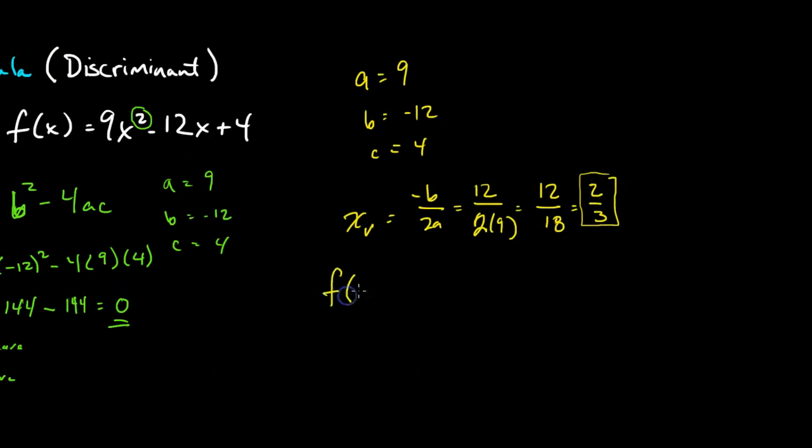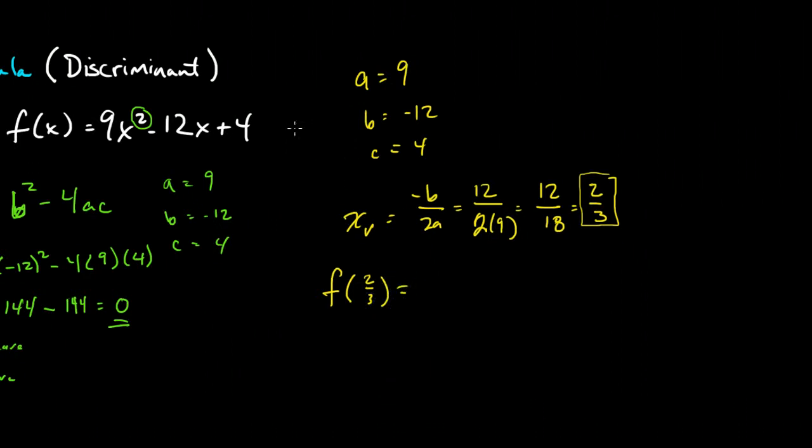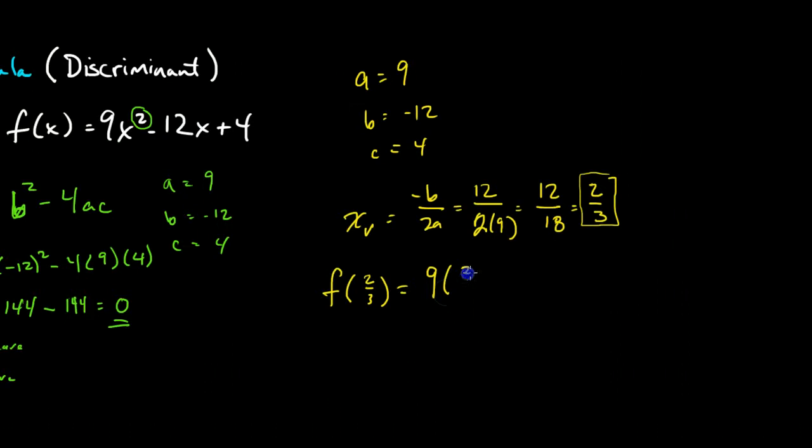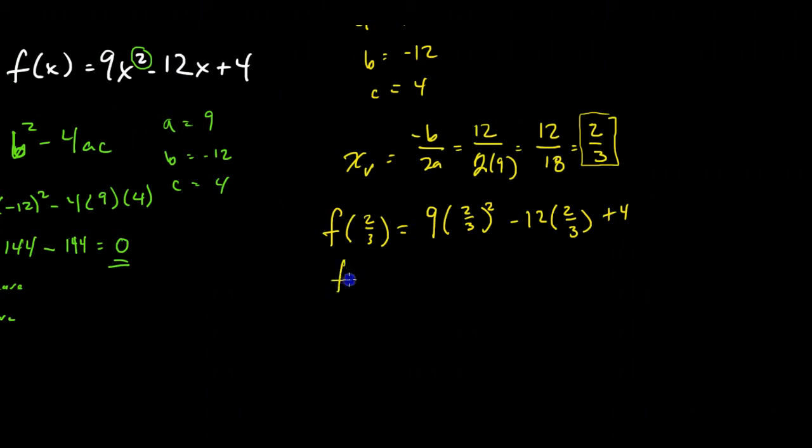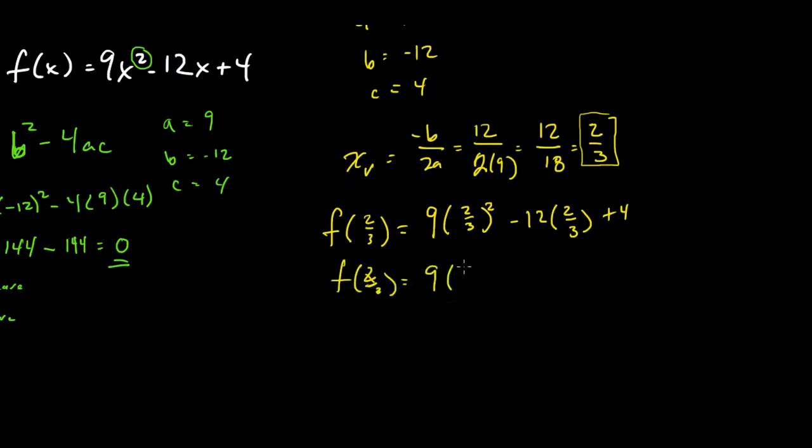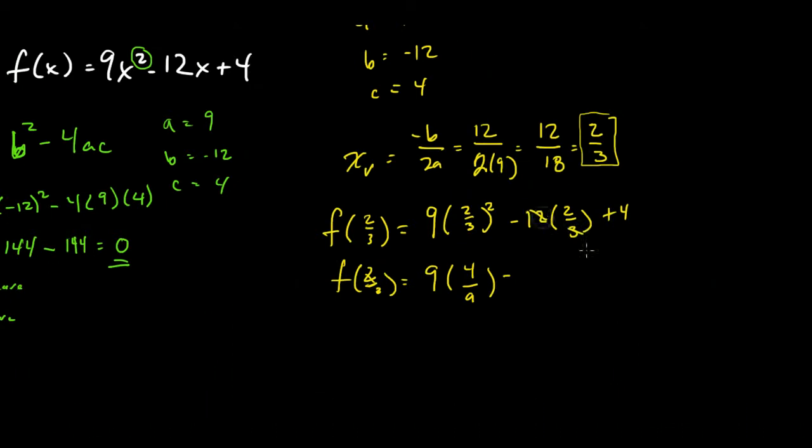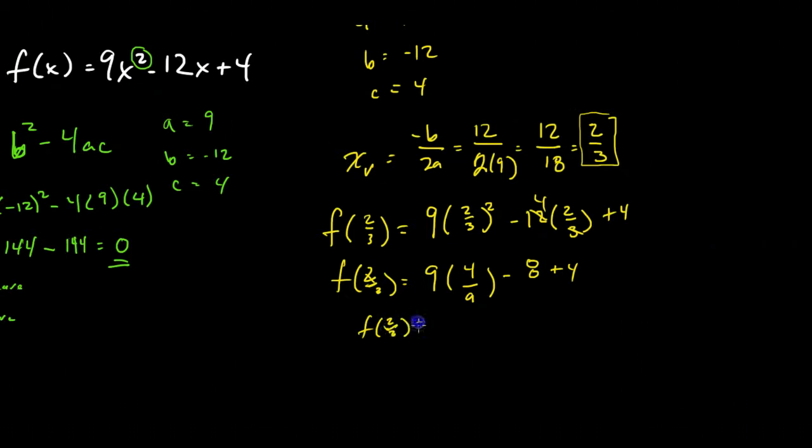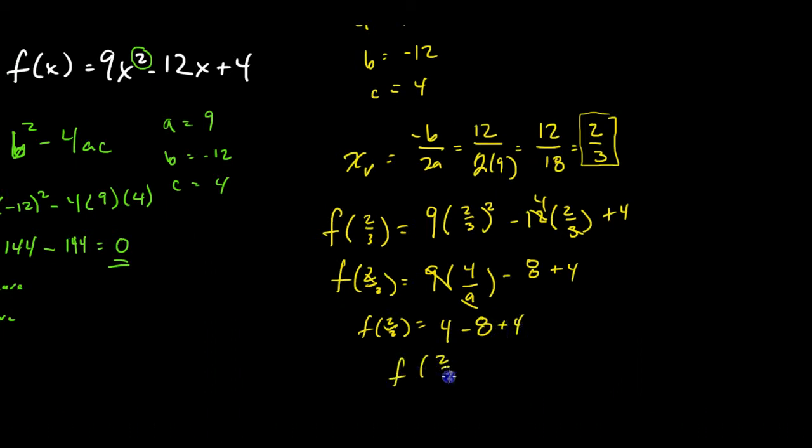So to find what y is, and to prove that this is on the x-axis, I will need to know what the f of 2 thirds is. So let's try it. If I have 9 times the quantity 2 over 3 squared, minus 12 times the quantity 2 over 3, and add 4 to that, what will be my y? So what's the f of 2 thirds? It will be 9 times the quantity 4 over 9, minus, those will cancel to 4. So that will be minus 8, 4 times 2 is 8, and then plus 4. So let's see what happens now. My 9's will cancel here. So I have 4 minus 8, plus 4, or the f of 2 thirds is 0.